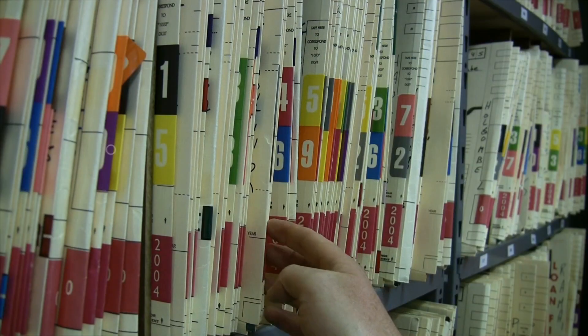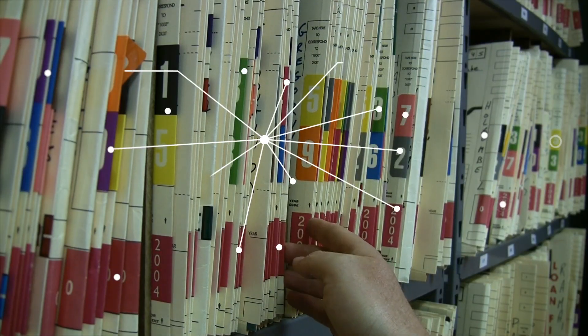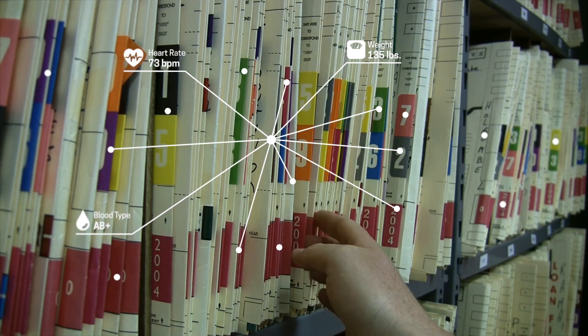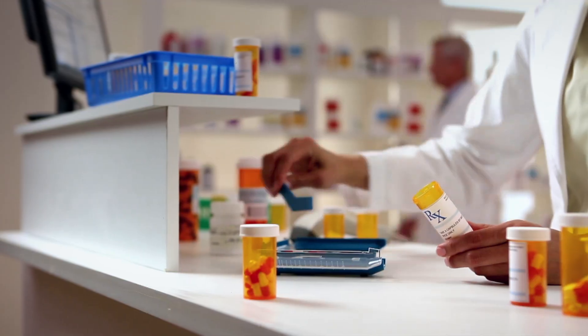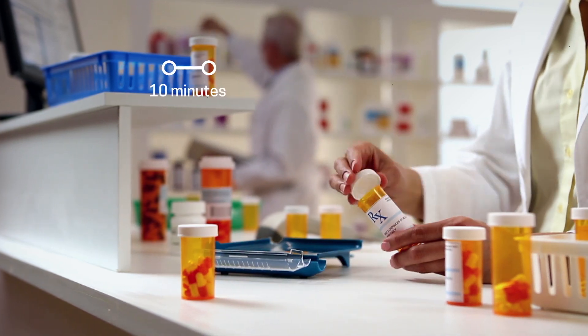Psyche helped the Cleveland Clinic sift through 5 million patient records to find the perfect 82 drug trial candidates for a new cardiovascular therapy. A search like this usually takes 10 weeks. It took Psyche 10 minutes.